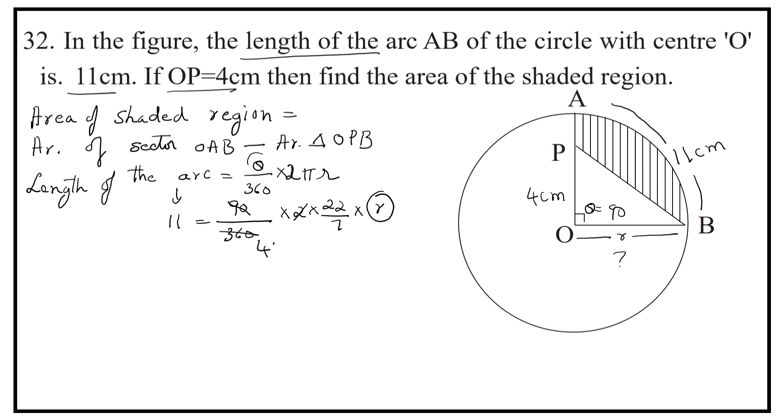Let us simplify it. Simplifying the equation, 11 and 11 get cancelled in the LHS and RHS. So, R by 7 is equal to 1. It implies that R is equal to 7.